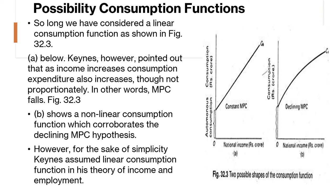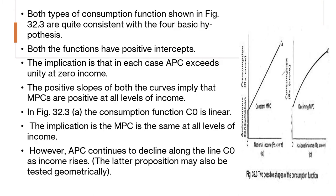Let's understand the different possibilities of the consumption function. In the case of a linear consumption function, shown in panel A, Keynes pointed out that as income increases, consumption increases but not proportionally — meaning the marginal propensity to consume would fall. In the case of a nonlinear consumption function, shown in panel B, the MPC is found to be declining. However, for the sake of simplicity, Keynes assumed only the linear consumption function when he explains his theory of income and employment, concentrating on the linear form. Both types of consumption function are quite consistent with the four basic hypotheses already explained.